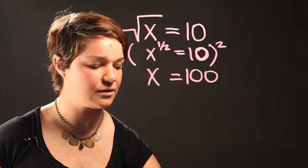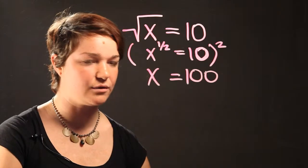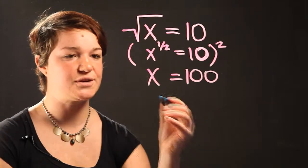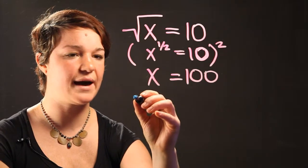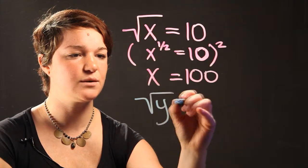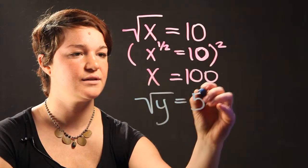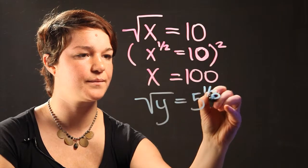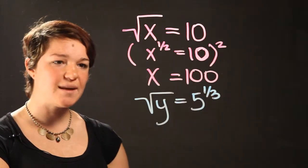Let's do another equation where you have radicals on both sides of the equation. So let's say that we have the square root of y is equal to 5 to the 1 third power. So what does that mean?